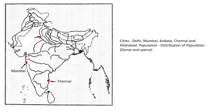Then we have Delhi, which is on the bank of the Yamuna river, so it should touch the Yamuna river — that is absolutely in the center, you can take Delhi there. Then we have Kolkata. And we know that the point where Ganga and Yamuna are joining — that is Allahabad.